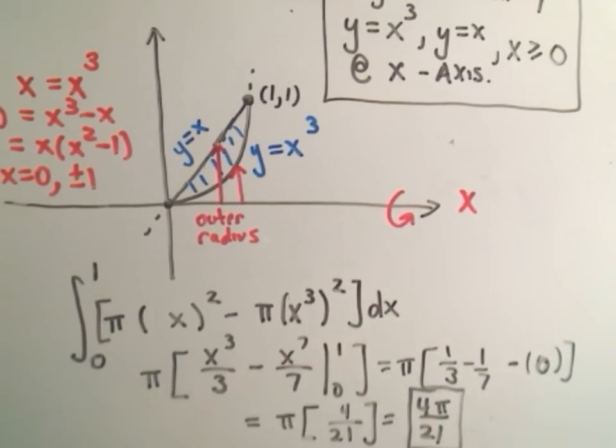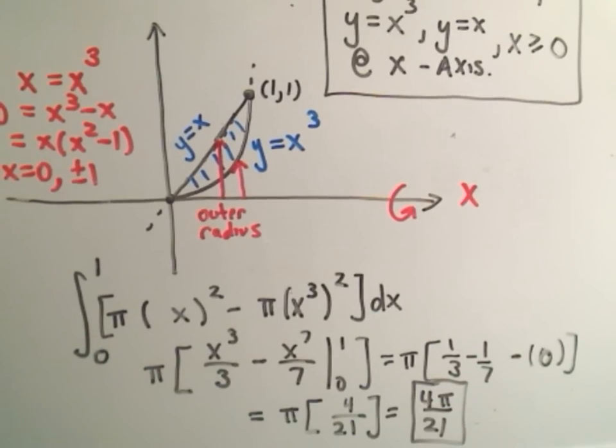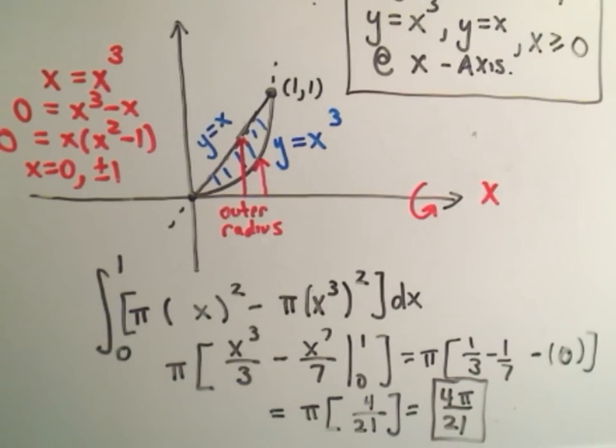We should get seven minus three or four over 21, or we could write it as four pi over 21. That will be our volume of this region when it gets revolved about the x-axis.